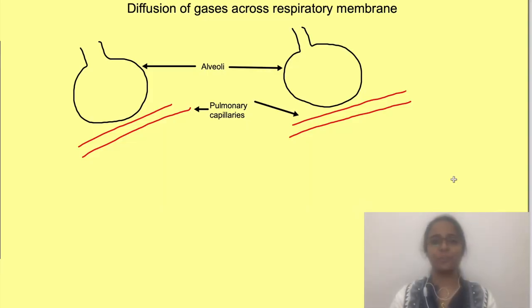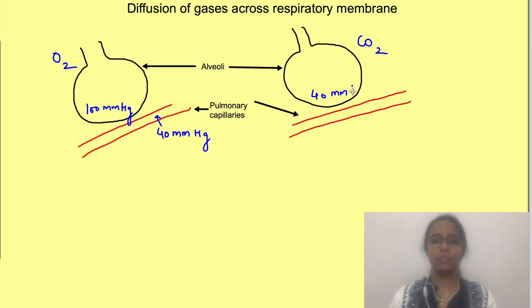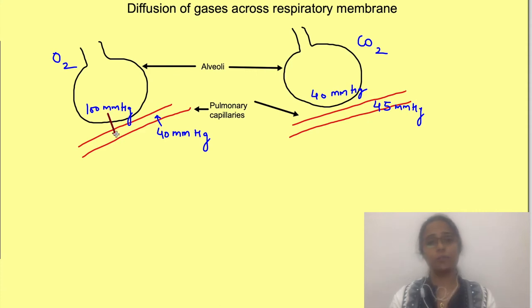Hey, welcome to Physiology Open. The partial pressure of oxygen in alveoli is approximately 100 mmHg, while in veins it is 40 mmHg. Partial pressure of carbon dioxide in alveoli is 40 mmHg, while in venous blood it is 45 mmHg. As gases diffuse from areas of higher to lower partial pressures, oxygen diffuses from alveoli to blood, while carbon dioxide diffuses from blood to alveoli.